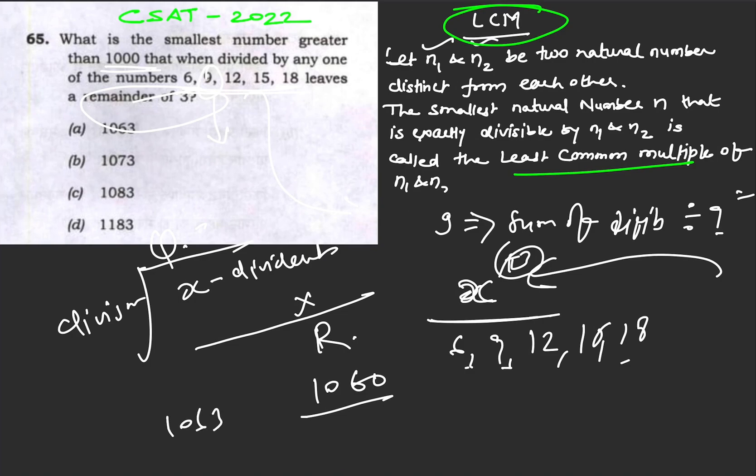Sum of digits: 1+0+6+0 = 7, which is not divisible by 9. Same thing goes with the other options.